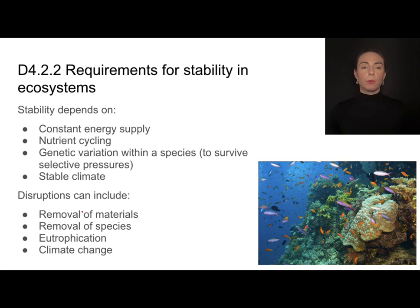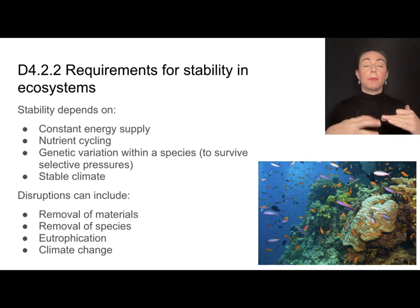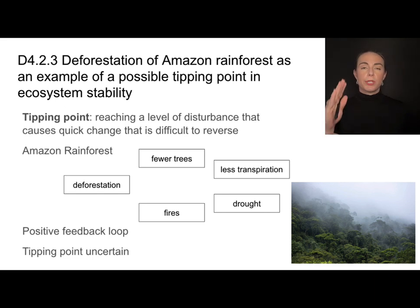Disruptions could include removal of materials — deforestation is an example of removal of things like trees. Removal of species: poaching can definitely alter the species diversity in an area. Eutrophication — having too many nutrients, especially in bodies of water — can cause things like algal blooms and change oxygen availability. And climate change is a big disruptor affecting ecosystems, especially sensitive ones like coral reefs.